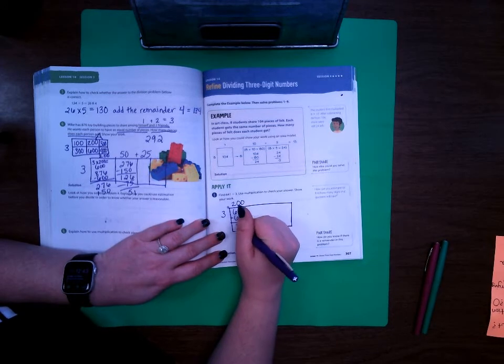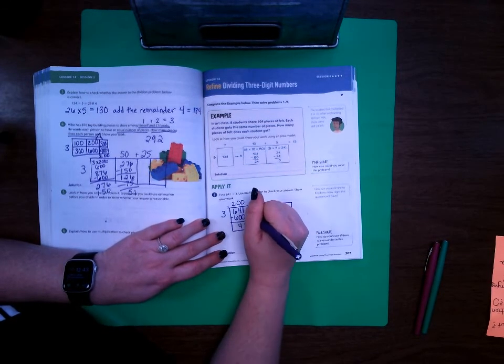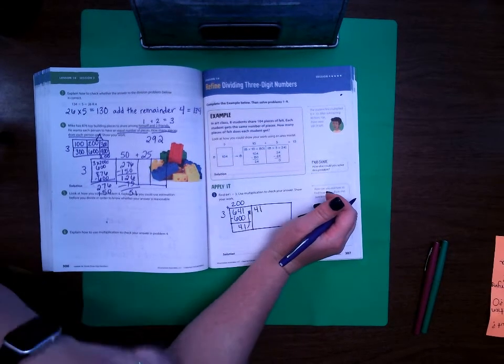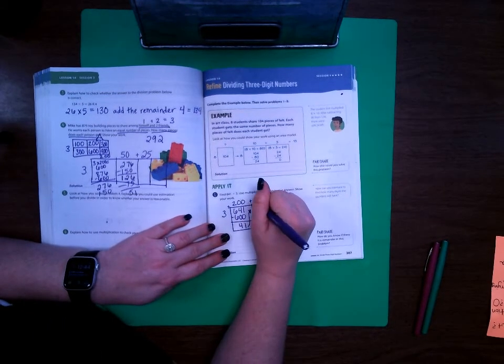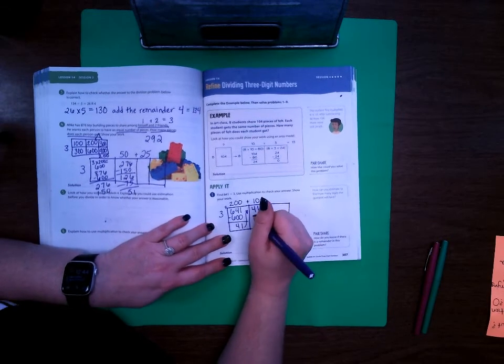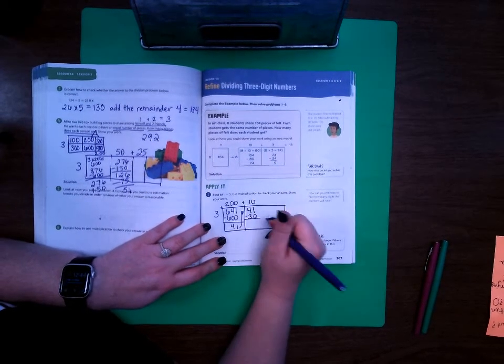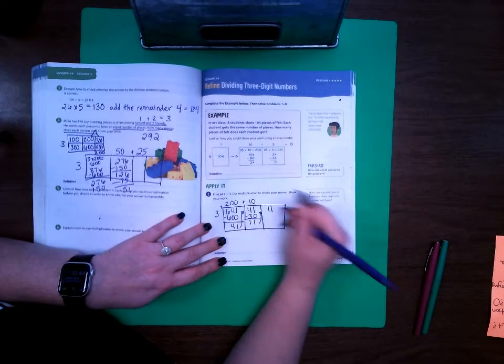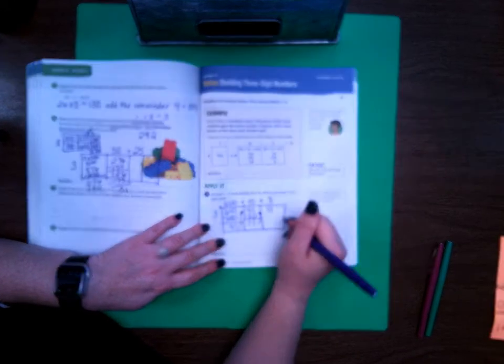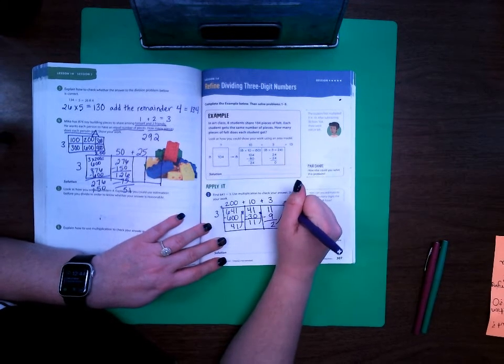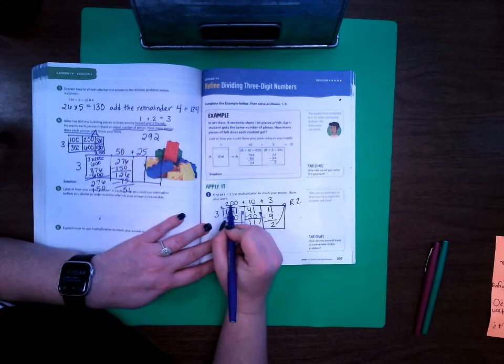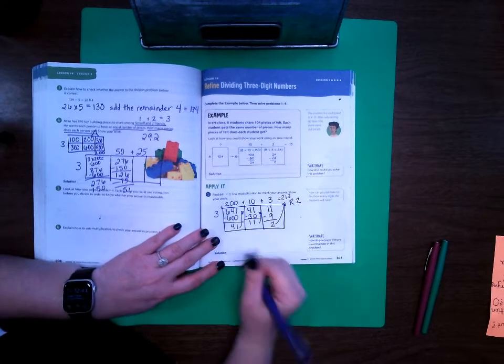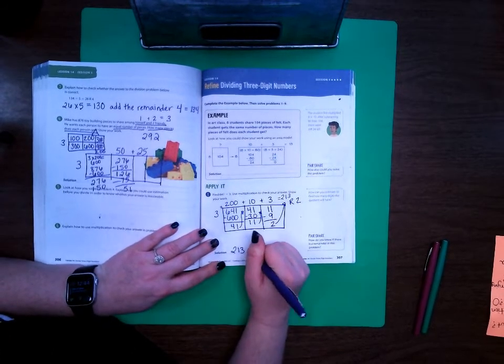That means 1 subtract 0 is 1, 4 subtract 0 is 4. All right now I'm going to move that 41 up here. 3 times what is as close as I can get without going over? Well I'm going to do 3 times 10, 3 times 10 is 30. So I'm going to subtract 30 from 41 and I have 11 left over. Then I'm going to move the 11 up here. I know that 3 times 3 is 9 that leaves me 2 which is my remainder. Now I add these three together which is 213 remainder 2. So my answer is 213 remainder 2.